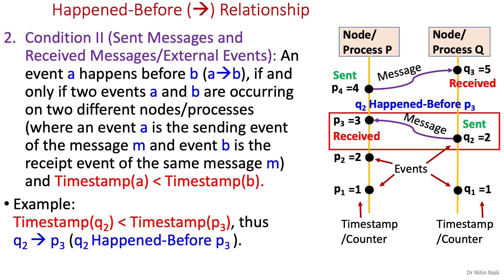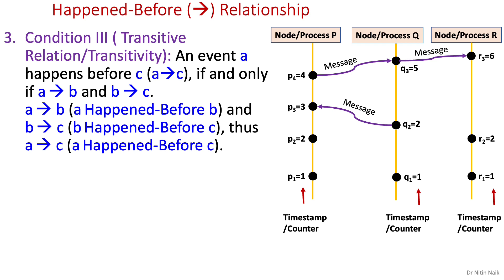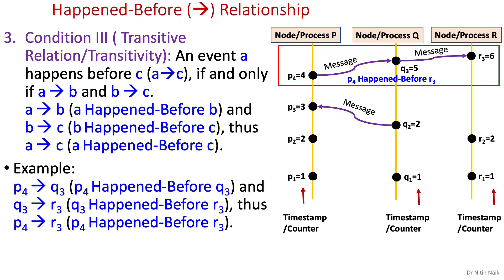Therefore Q2 happens before P3. Transitive relation, or transitivity, is another condition for happened-before relationship. It is based on the second condition: an event A happens before C if and only if A happened before B and B happened before C. For example, if event P4 happened before Q3 and Q3 happened before R3, therefore P4 happened before R3. The timestamp of P4 is less than the timestamp of R3. So the happened-before relationship can be applied transitively — in other words, we can create a chain of events where one event happened before another.